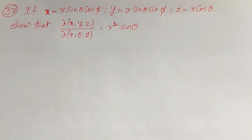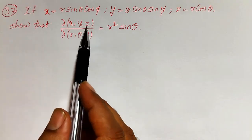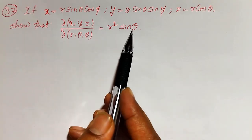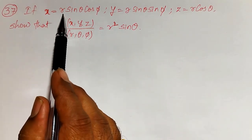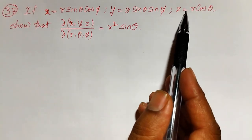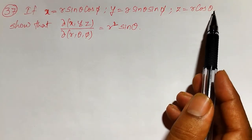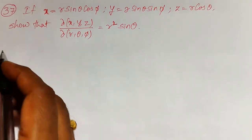Welcome friends. In this video, another interesting example on a Jacobian — I am going to evaluate the partial derivative or Jacobian of (x, y, z) with respect to (r, θ, φ), equal to r² sinθ. I am going to prove this, where x, y, and z are each defined as functions of r, θ, and φ. Now let me define the Jacobian first.